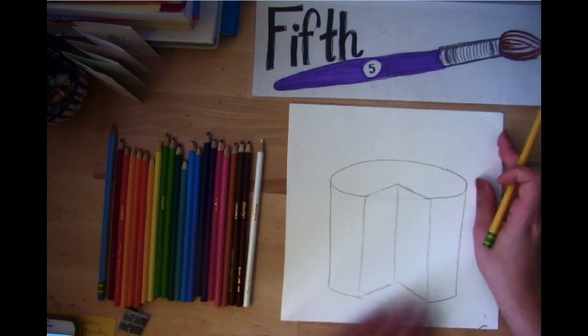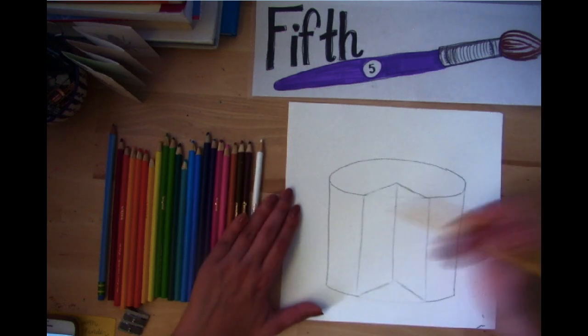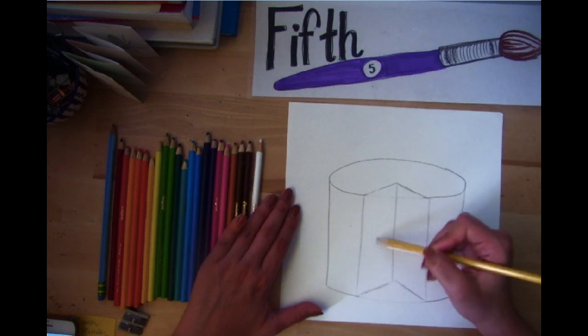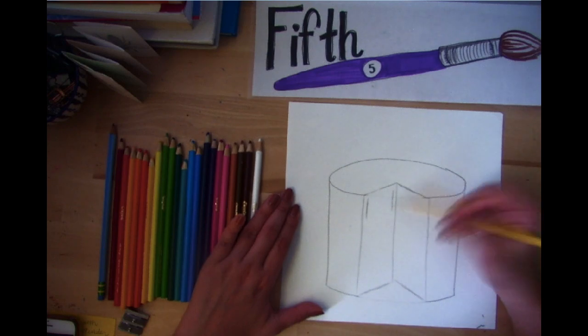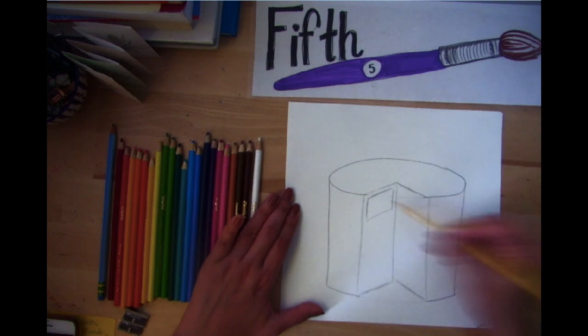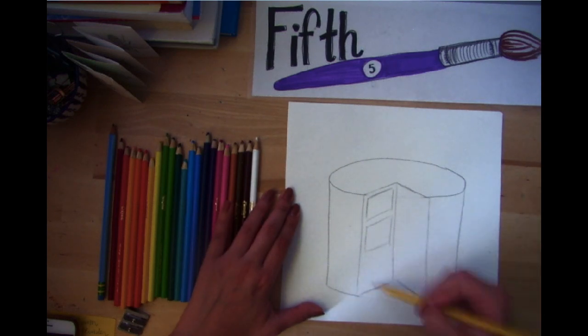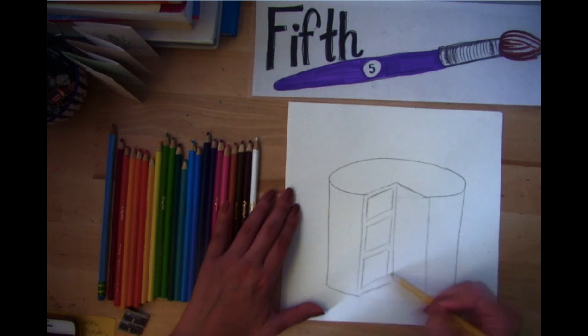And now since we've opened up a slice of our cake, we want to draw the pieces of cake that are inside in between the frosting, right? So I'm going to draw a straight line, a straight line, and then diagonal lines to connect. So that's one layer of cake. I'm going to do three in total on this side and then on the other side.